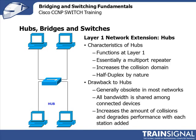Layer one network extension is essentially the function of hubs. A repeater is a two-port device; a hub is a multi-port device, but all it does is regenerate electrical signals. Hubs function at layer one — essentially a multi-port repeater. They increase the collision domain: the more devices on the network, the greater the collisions. They are half duplex by nature; you cannot have a full duplex hub. If you're connecting two computers with a crossover cable, you shouldn't have collisions at all, but that's a different scenario.